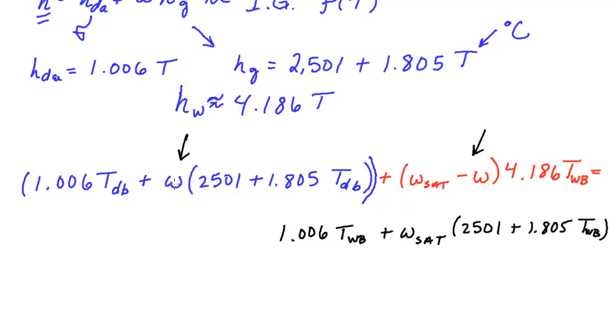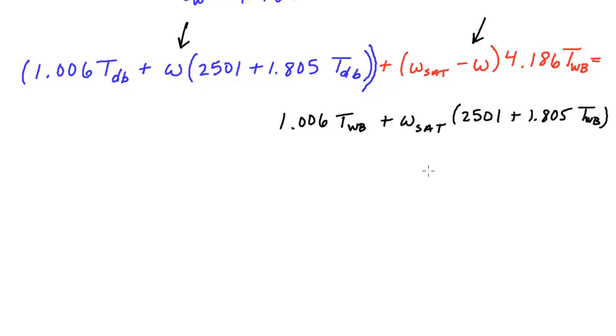Plus omega sat times 2,501 plus 1.805 T wet bulb. Now we are trying to solve this equation for omega which appears here and here. And I noticed I forgot another bracket right there. So let's begin by collecting all the terms for omega that we want on the left hand side of the equation.